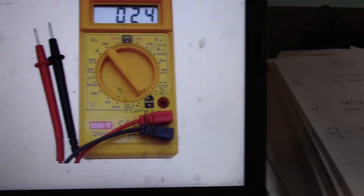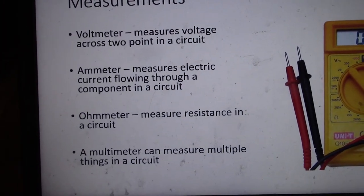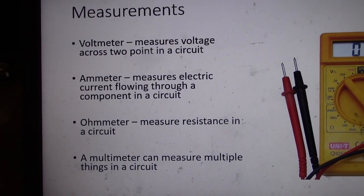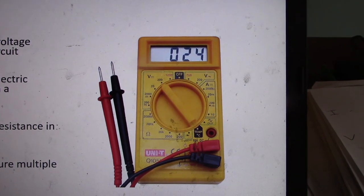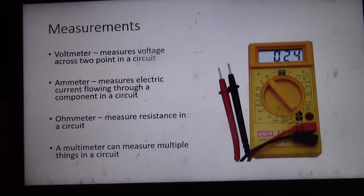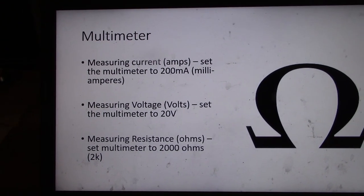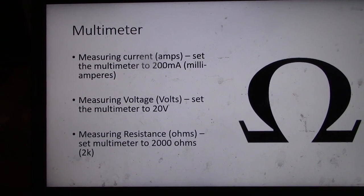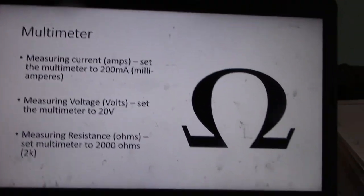How do we measure these things? A multimeter measures voltage, current, and resistance. You've all used multimeters in class. An ammeter measures current and ohms measures resistance. Set your multimeter to 200 milliamps to measure current, set it to 20 volts to measure voltage, and use 2000 ohms to measure resistance for conventional circuits in science class.